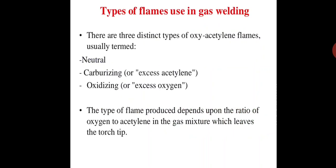There are different types of flames in gas welding. First is the neutral flame. Second is the carburizing or excess acetylene flame. Third is the oxidizing or excess oxygen flame. The type of flame produced depends upon the ratio of oxygen to acetylene in the gas mixture which leaves the torch tip.